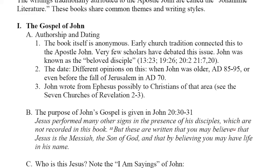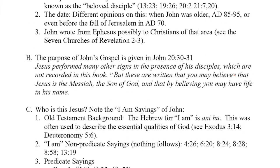Authorship and Dating. The book itself is anonymous, but early church tradition connected this to the Apostle John. Very few scholars have debated this issue. John was known as the Beloved Disciple. Regarding the date, there are different opinions. John could have written this when he was older, perhaps 85-95 A.D., or before the fall of Jerusalem in A.D. 70. John wrote from Ephesus, possibly to Christians of that area — see the seven churches of Revelation, chapters 2 and 3, which are located in that area.